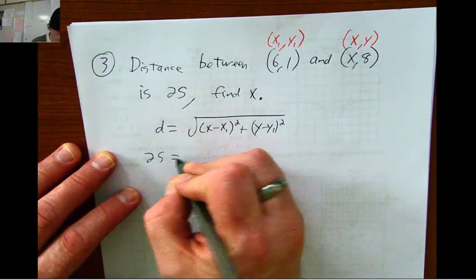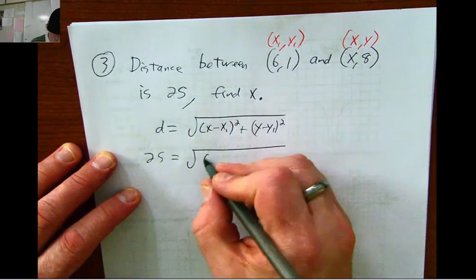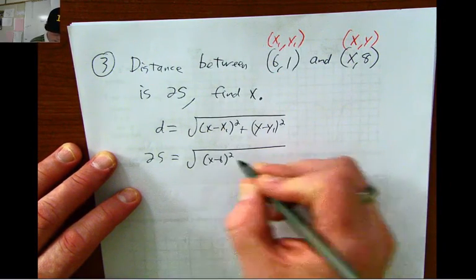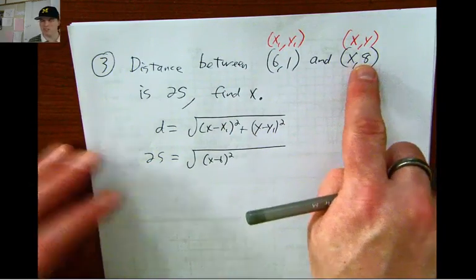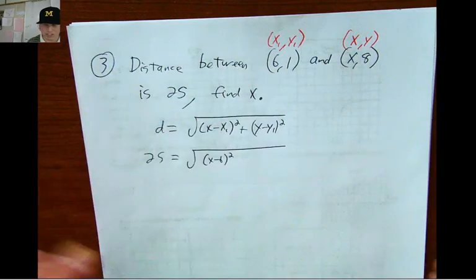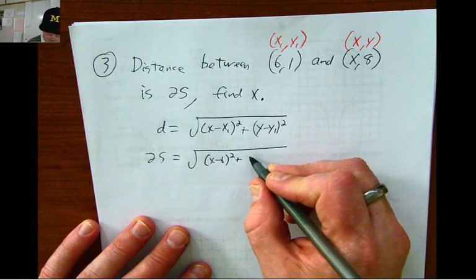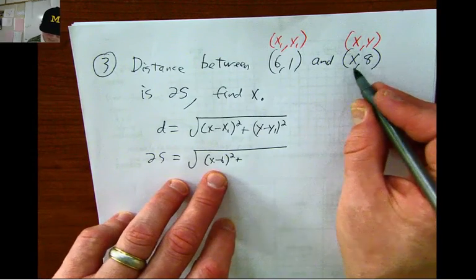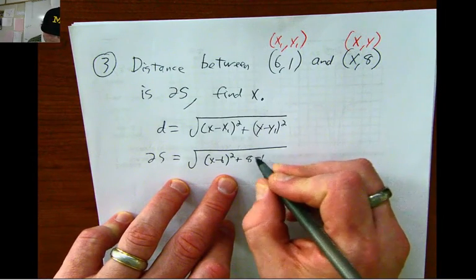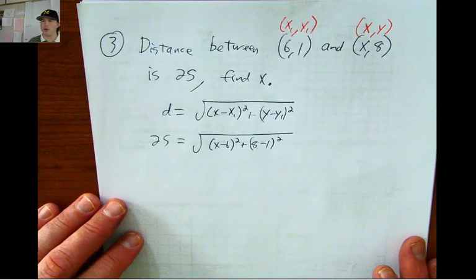25 equals the square root of x minus 6. You will still get this, even if you switched these around, you'll still get the same answer, but it might be a little bit more work. So I'd have to go 8 minus 1, quantity squared. And now you just have a little bit of an algebra equation to solve.